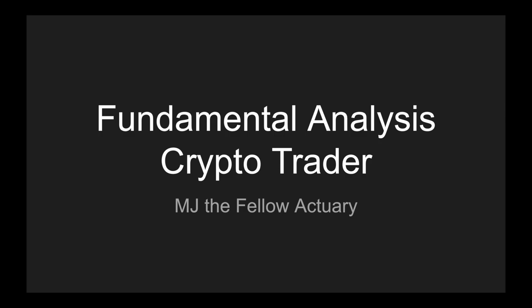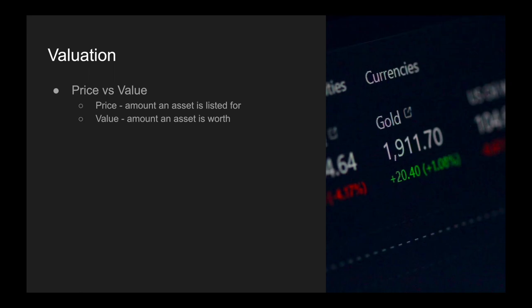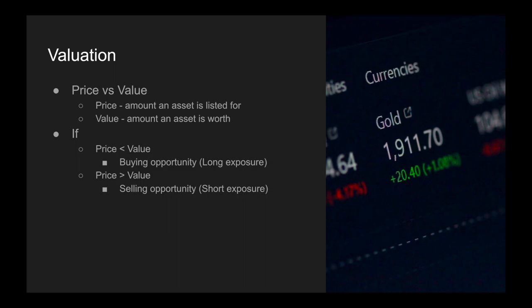Hi everyone, it's MJ, and welcome back to the series of videos on fundamental analysis for crypto traders. In this video, we're going to be talking about valuation — price versus value. Price is the amount an asset is listed for on exchanges, whereas value is the amount an asset is actually worth. If price is less than value, this is a buying opportunity, or using derivatives, you want to get long exposure. If price is greater than value, it's a selling opportunity — you can use a derivative and get short exposure. The assumption is that in the long term, price and value will converge.